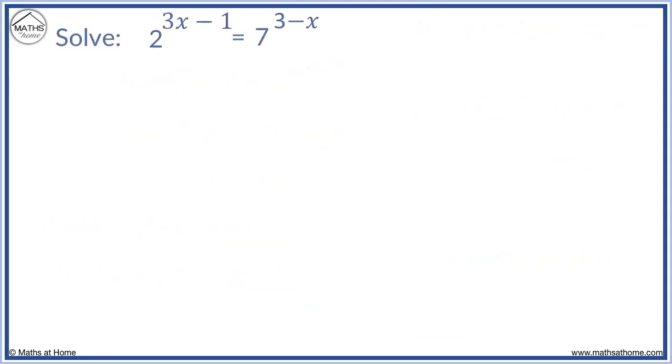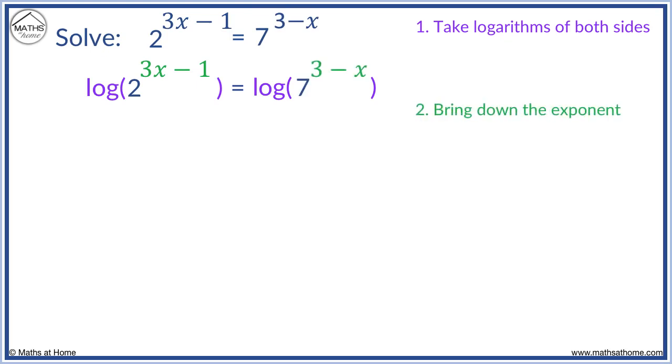This time we will solve 2 to the 3x minus 1 equals 7 to the 3 minus x. We take logs. We bring down the exponents, remembering to leave them in brackets.